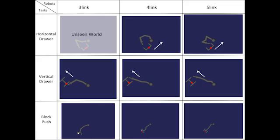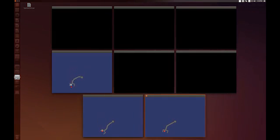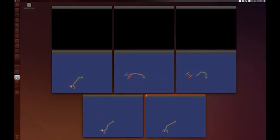The third scenario involves more complicated manipulation tasks which do not use vision. In this experiment, we have three robots: a three-link robot, a four-link robot, and a five-link robot. We have three tasks: pushing a block, pushing a drawer vertically, and pulling a drawer horizontally. These tasks involve distinctly different motions. Here is the set of all the robot-task combinations that we train on.